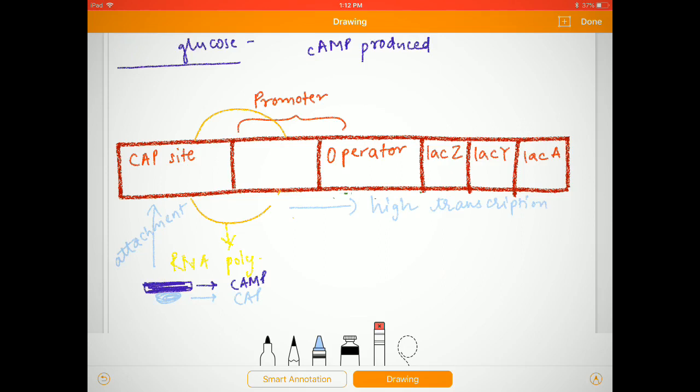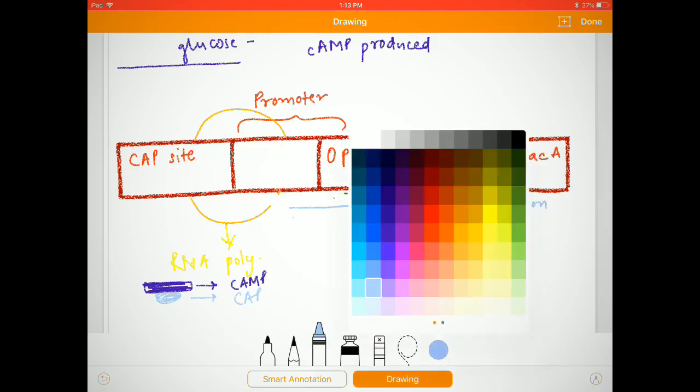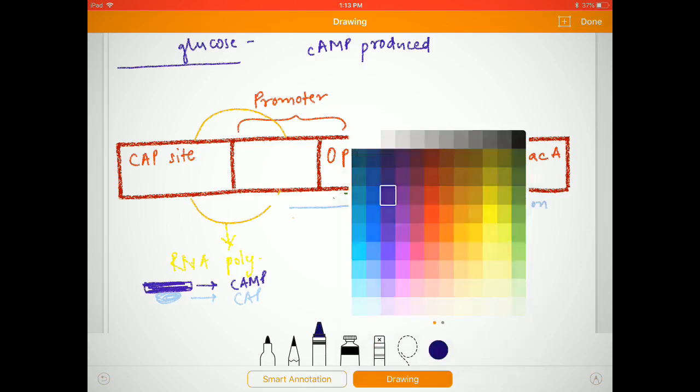Next, if this cell is in a high glucose environment, then what will happen? Here, cAMP is not produced, which will not allow the CAP to bind. The CAP will not further bind to the CAP site, and there will be low or no transcription at all for further genes.